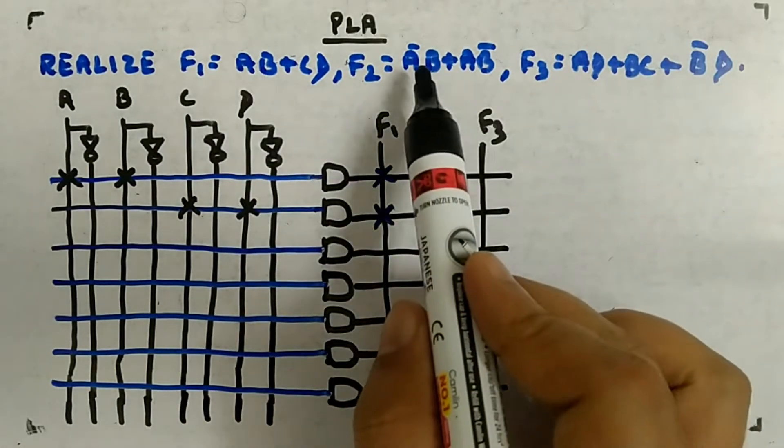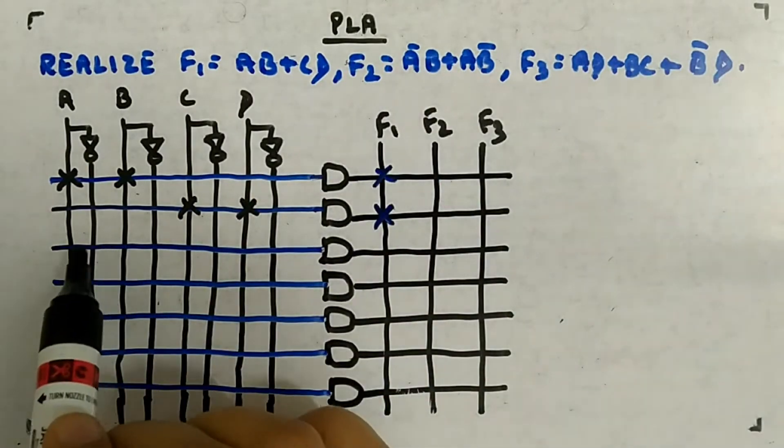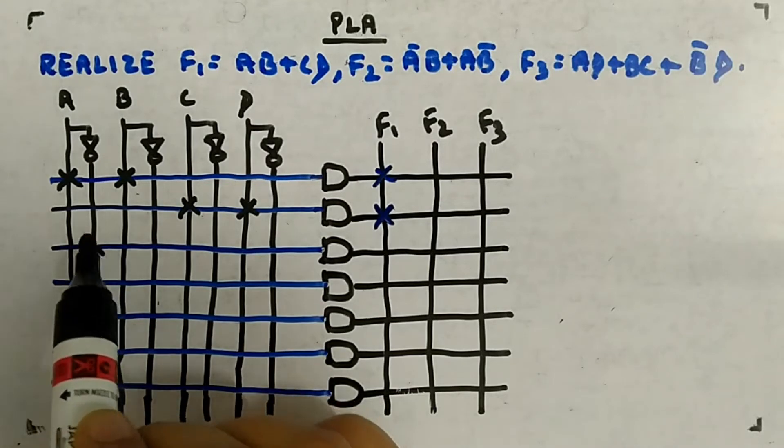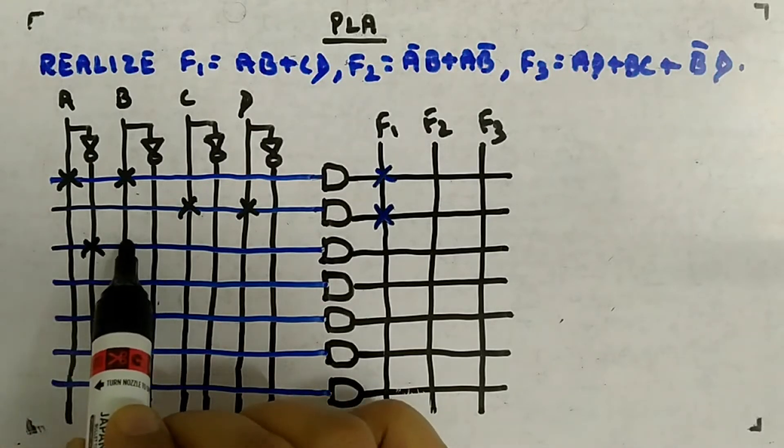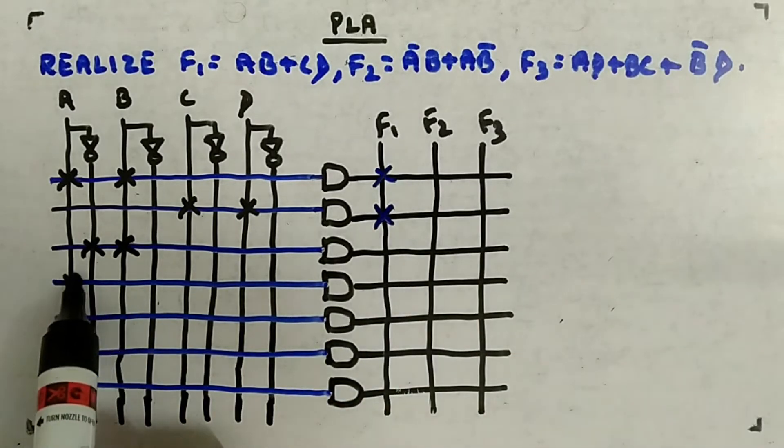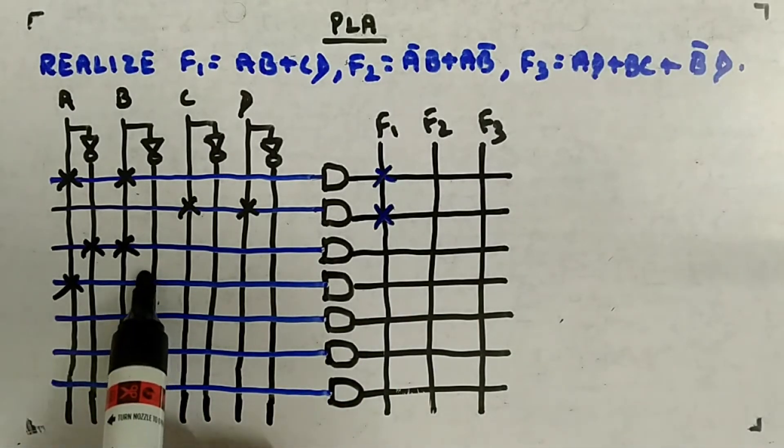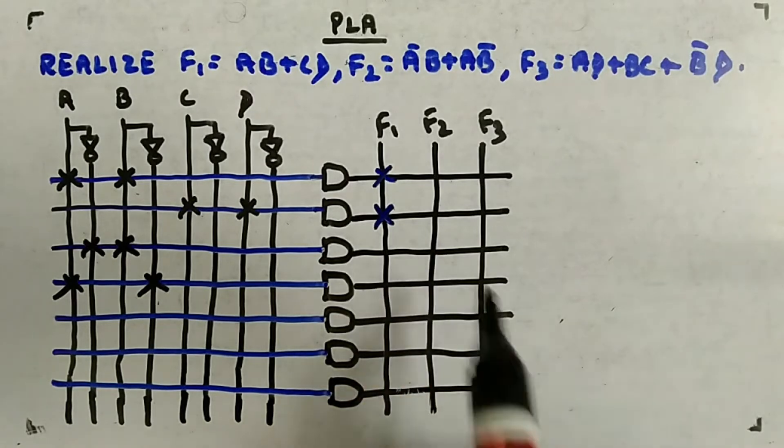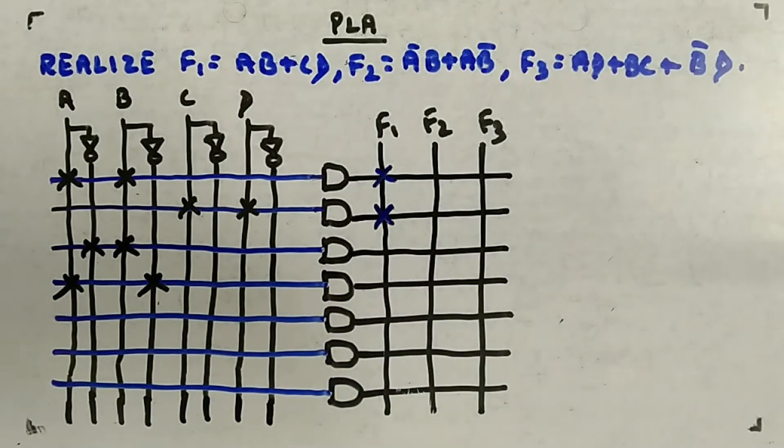Now we want A bar B plus AB bar. So A bar B and from the next one AB bar, AB bar. So from here you will get f2.